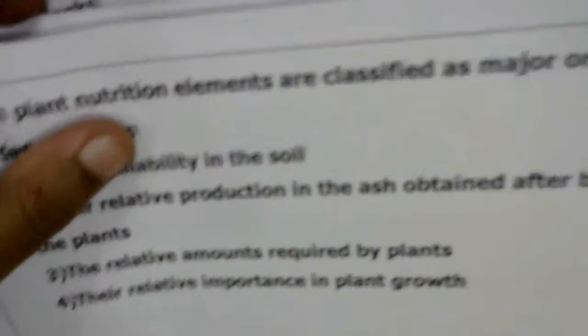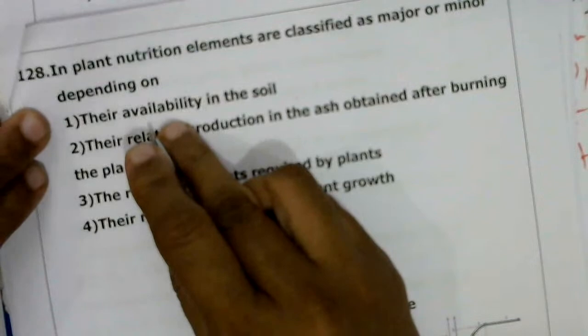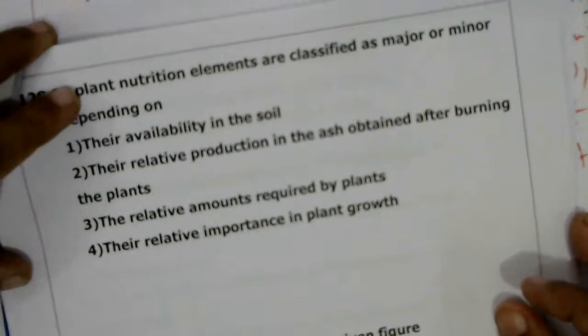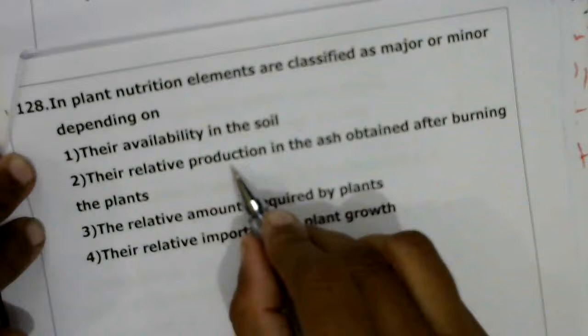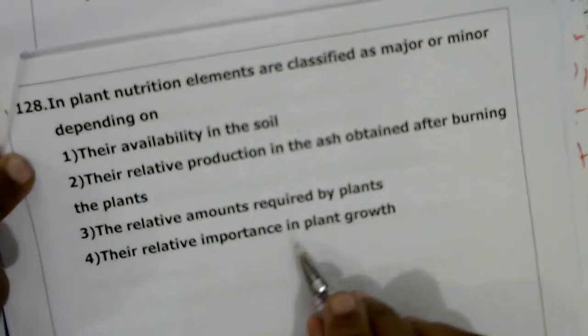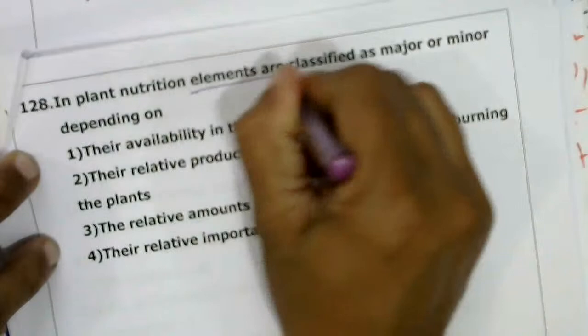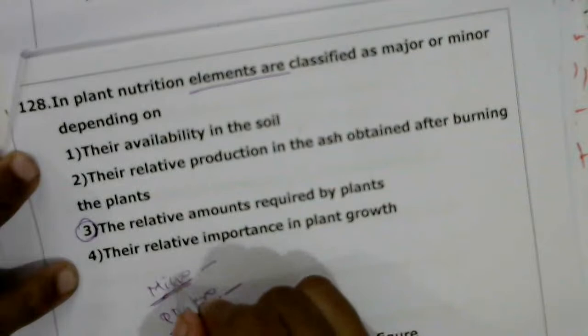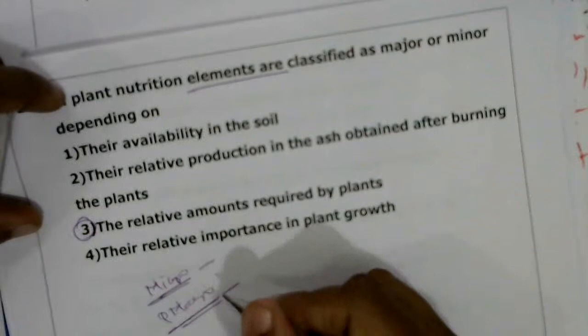Next question: in plants, elements are classified as major (macro) and minor (micro) depending on what? Nutrient elements are classified based on the relative amount required by plants. Micronutrients are required in less than 10 millimolar per kg of dry weight; macronutrients are required in more than 10 millimolar per kg of dry matter. The correct answer is the third option.